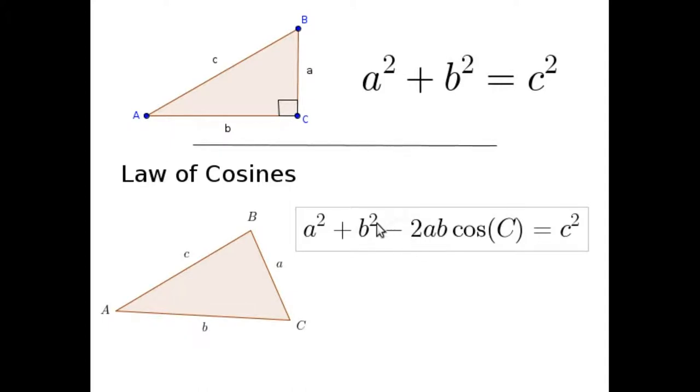It's also easy to see that this needs to be a minus if C is an acute angle. You see, if a and b maintain the same size that they were in the Pythagorean Theorem when we had a right angle, and we've made that angle smaller, then c has become smaller, so we'll need to subtract a fudge factor from this side.